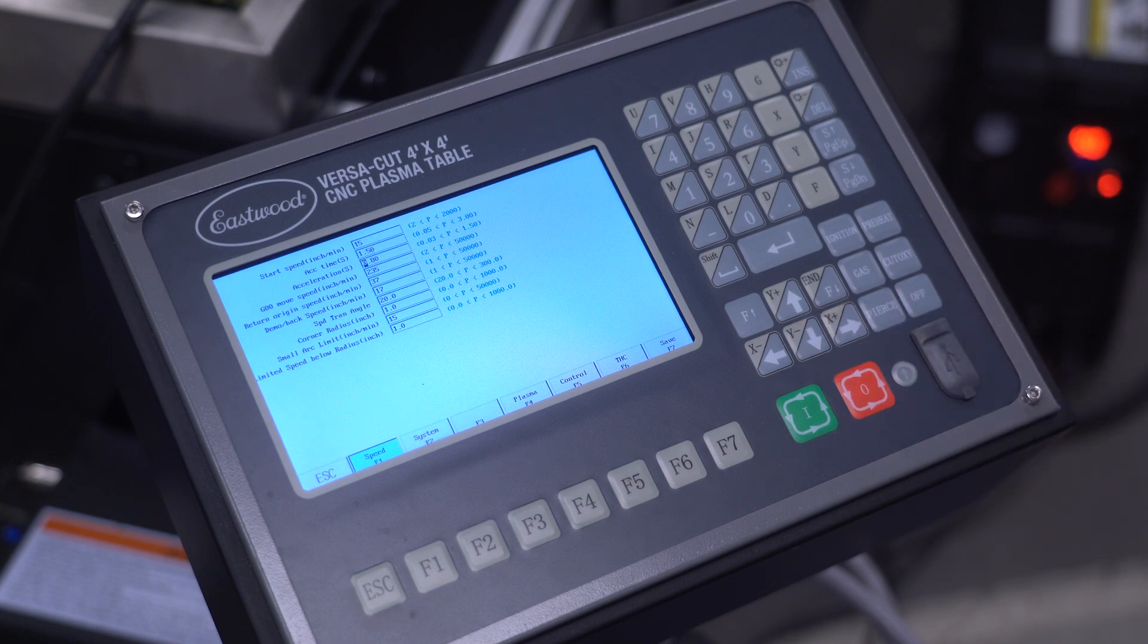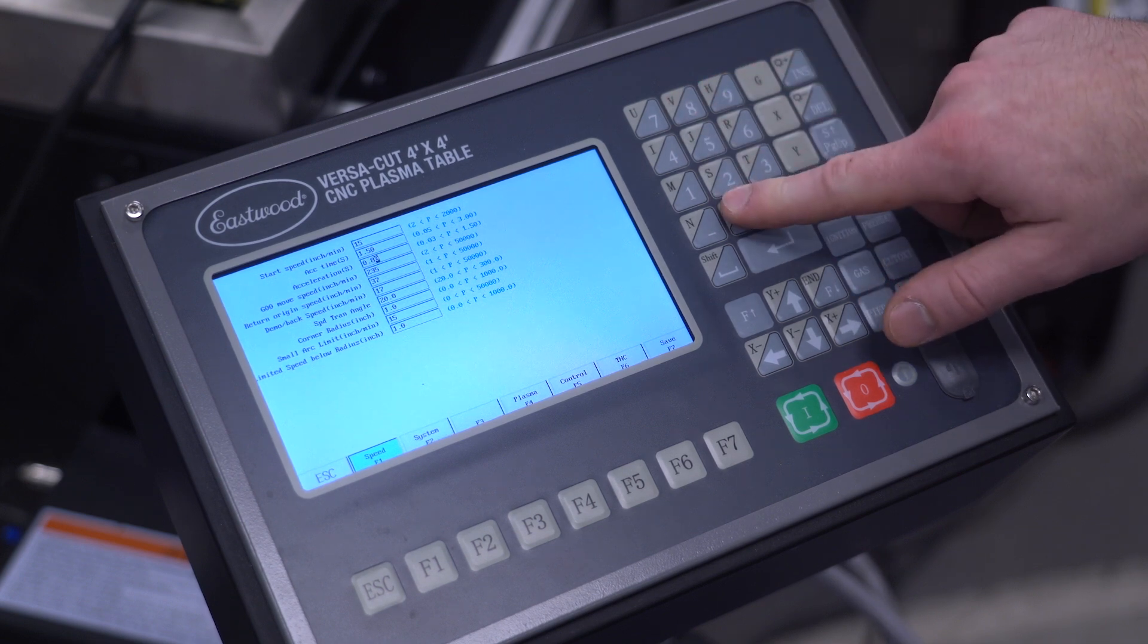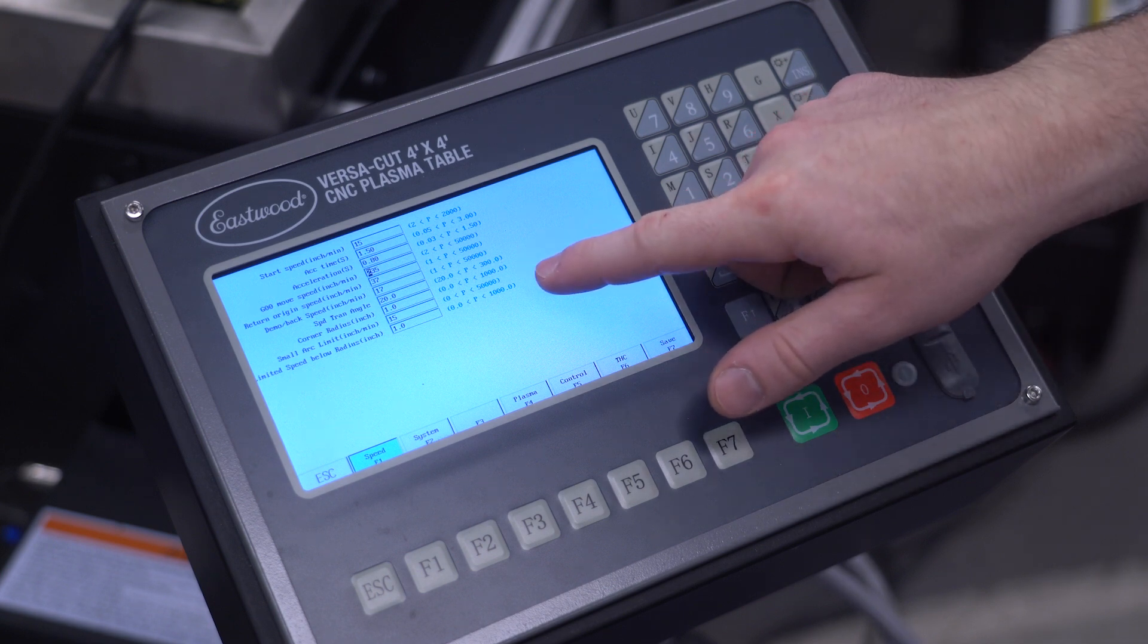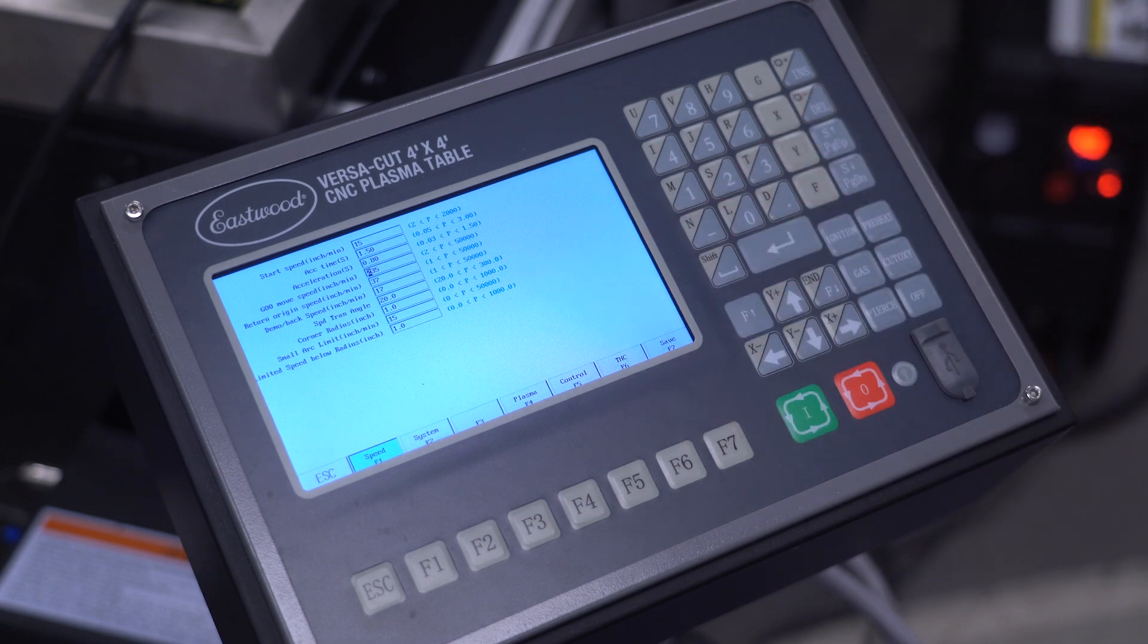Acceleration sets how aggressively the torch changes direction. Turning that up to about 0.8 gives more sluggish movement for improved beam stability. Small arc and limited speed below radius we can use to get the best quality possible out of small holes and arc features.